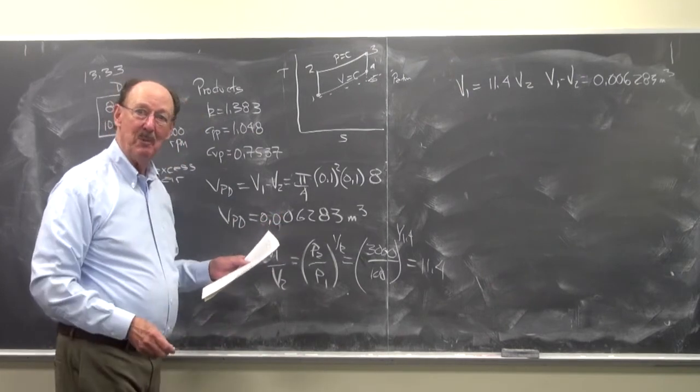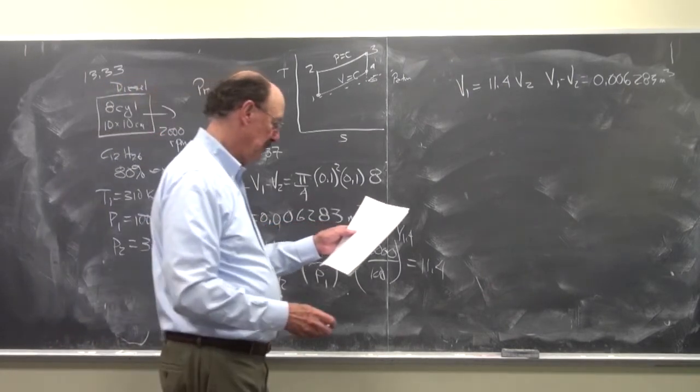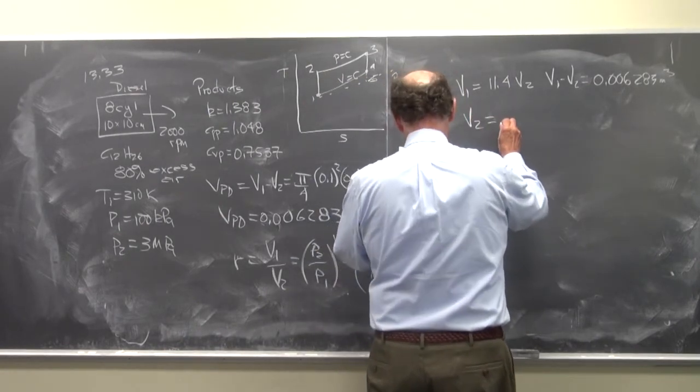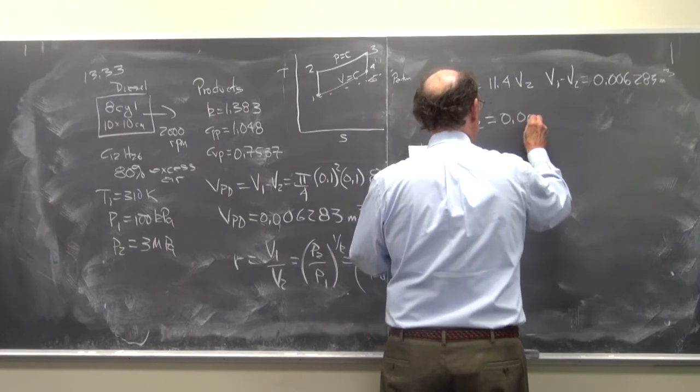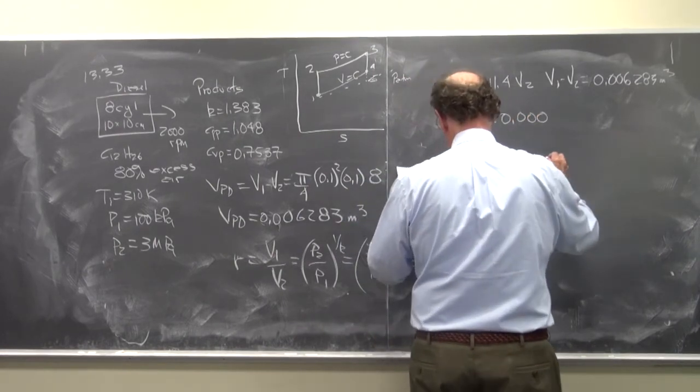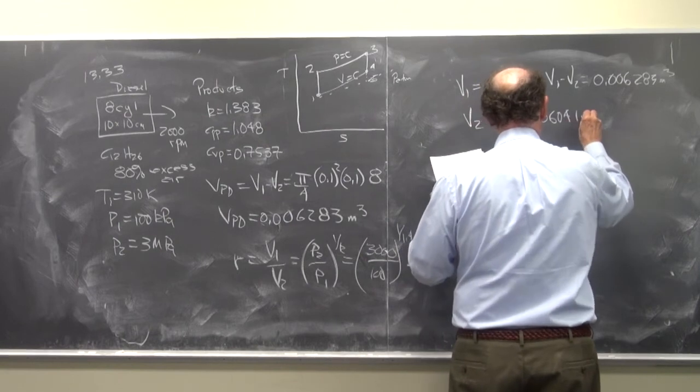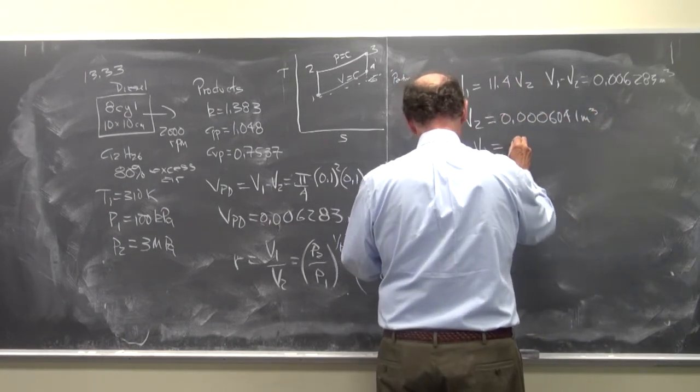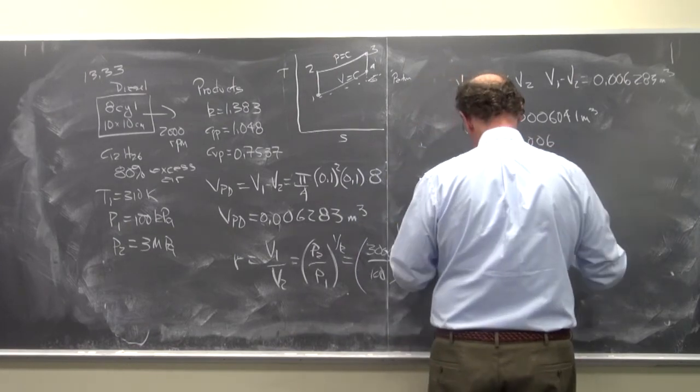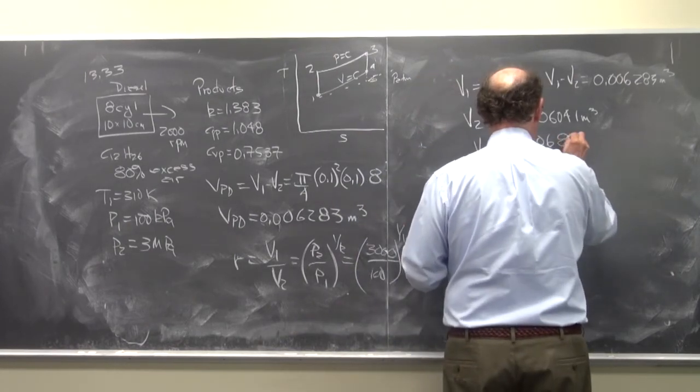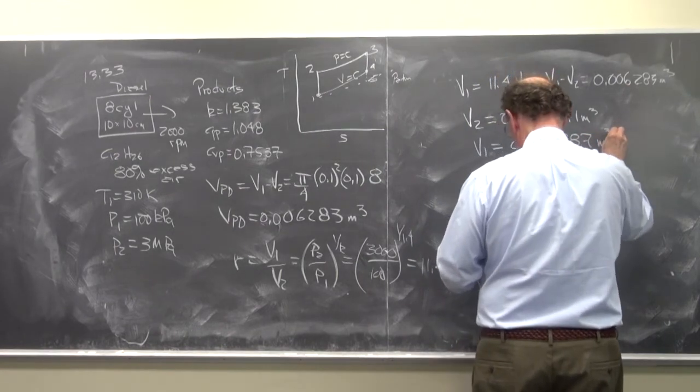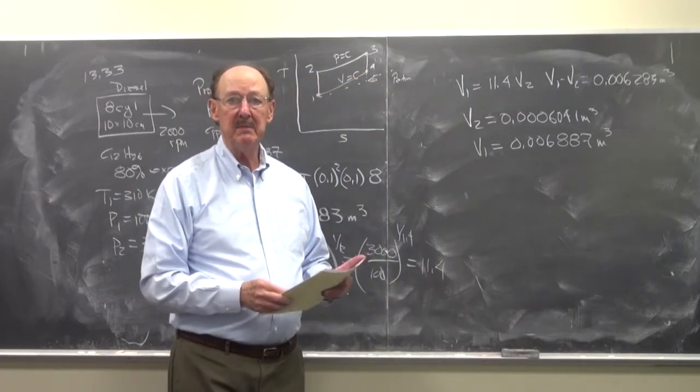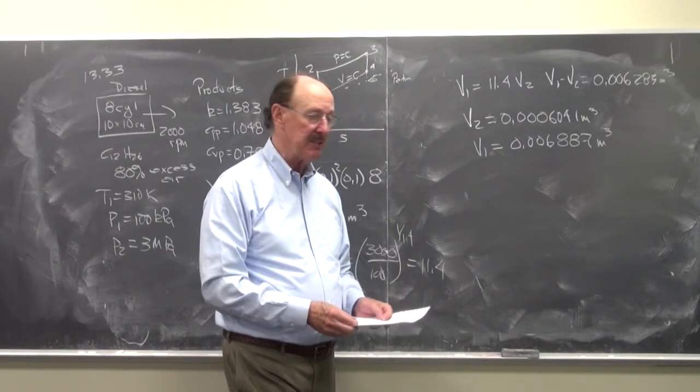The nice thing about the video is that I can go back and you can do that and change your notes. And so now V2 is equal to 0.006887 cubic meters. And V1 is equal to 0.006887 cubic meters. And what we're doing in this is we're neglecting the unpurged products of combustion.